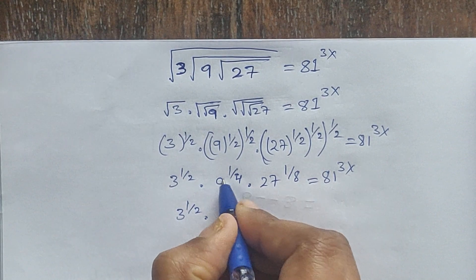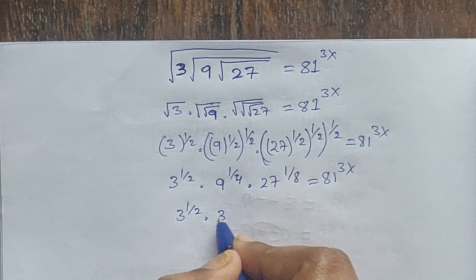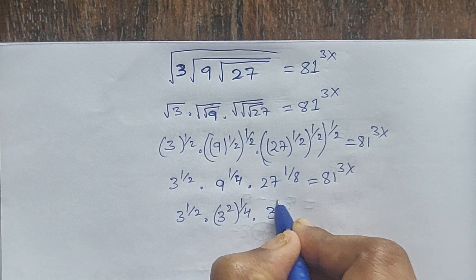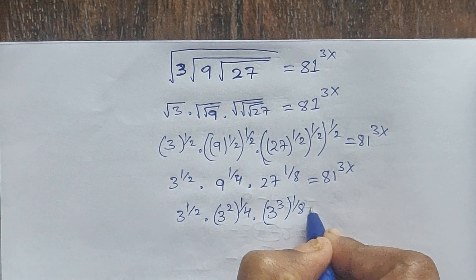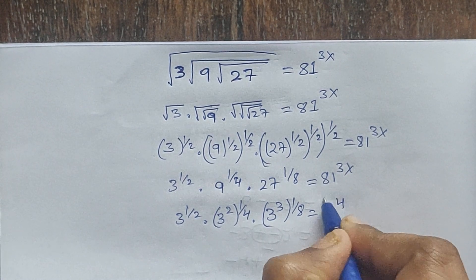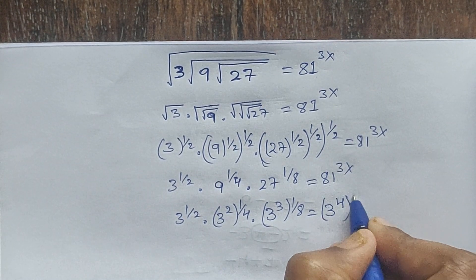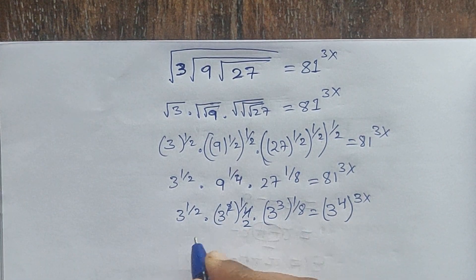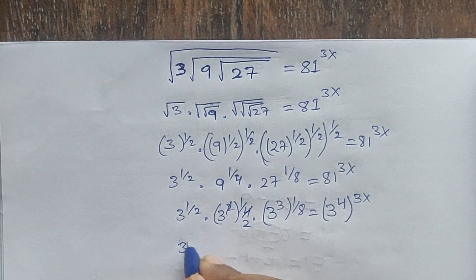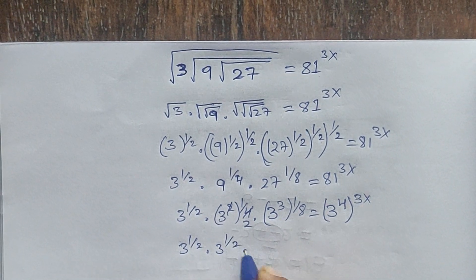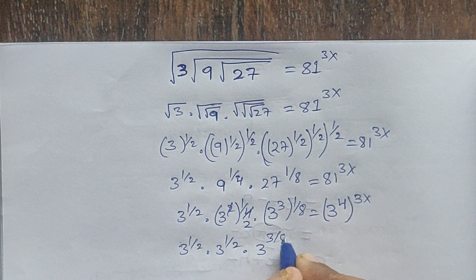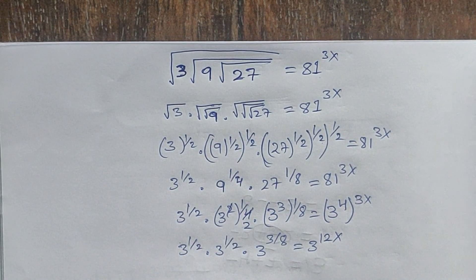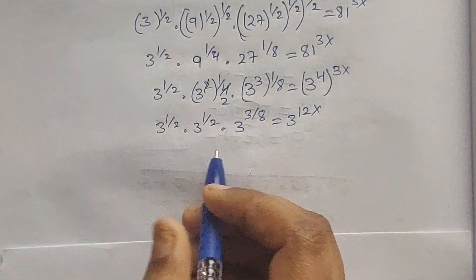Now: 3 to the power of 1/2. Then 9 can be written as 3 squared, to the power of 1/4. And 27 can be written as 3 to the power of 3, to the power of 1/8. And 81 can be written as 3 to the power of 4, to the power of 3x. So we get 3 to the 1/2, times 3 to the 2/4 which is 1/2, times 3 to the 3/8, equal to 3 to the power of 12x.